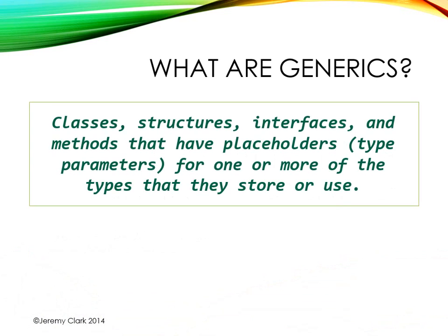So just to review, what are generics? Well, they're classes, structures, interfaces, and methods that have placeholders — type parameters — for one or more of the types that they store or use. We've already seen these in List of T; they are very common in collections. Last time we looked at how we could use them in interfaces to create a generic repository that will work with any of our different class types.